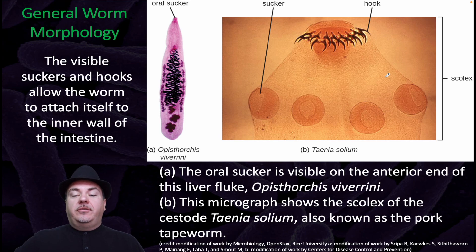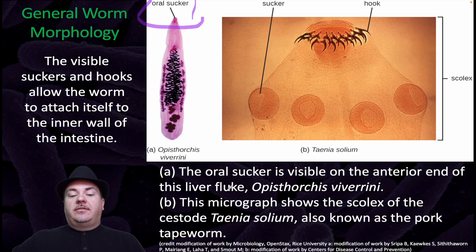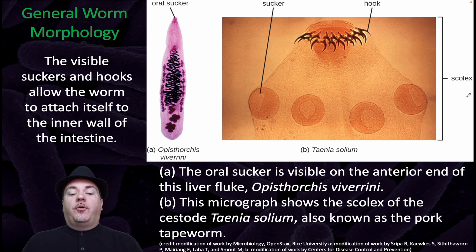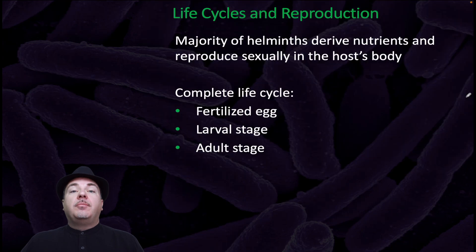A couple of examples: you have the oral sucker that's clearly visible on this liver fluke. And in this cestode, which is the pork tapeworm, you can clearly see the scolex, including the hooks and the suckers. The majority of Helminths derive nutrients and reproduce sexually in the host body.